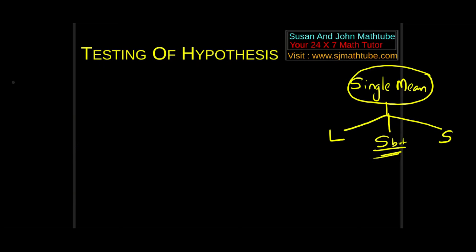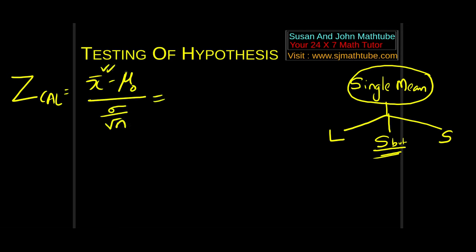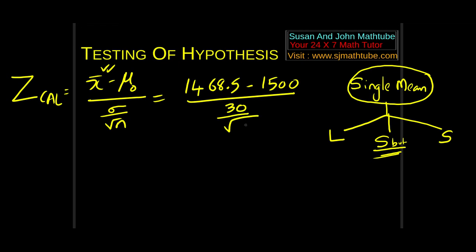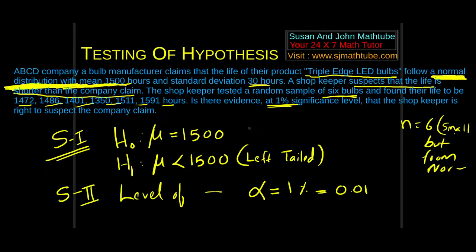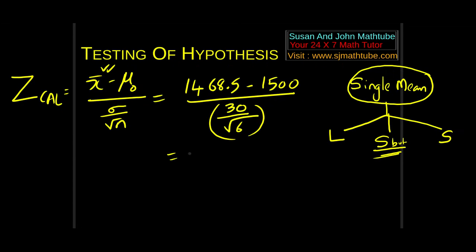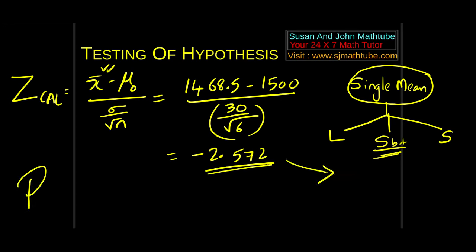Therefore: z calculated = (x̄ − μ₀) / (σ / √n) = (1468.5 − 1500) / (30 / √6) = −2.572. The rest you try yourself — the answer is reject H₀.